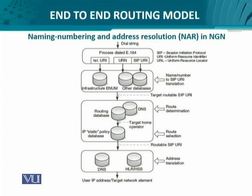Route determination involves the DNS, the routing database, and other entities such as the routing tables. After the route selection is done, the routable SIP URI is once again referred to — whether it is a query sent for a destination within the domain or outside the domain, or if it is for a mobile user or a static user in any network. Corresponding entities including the DNS and the home location register are consulted.